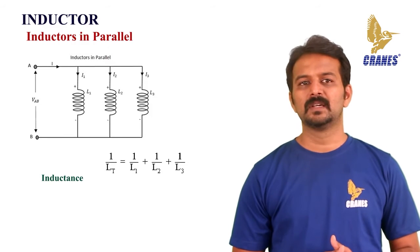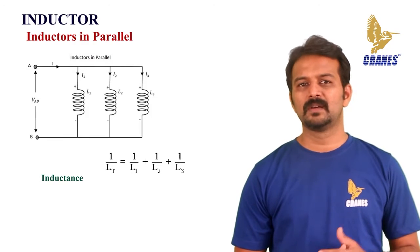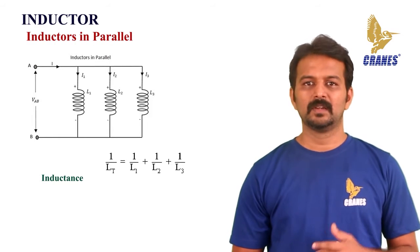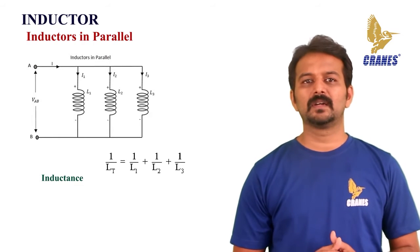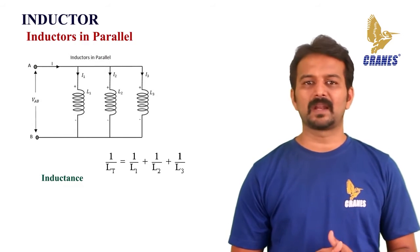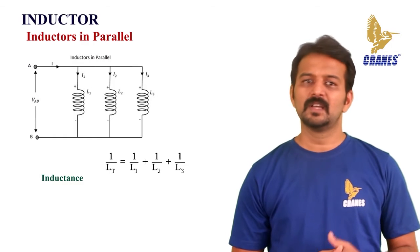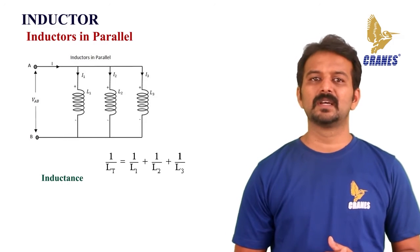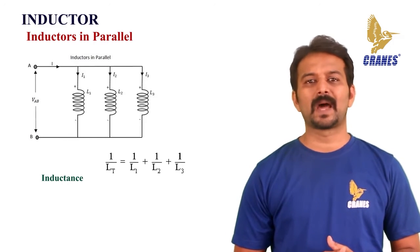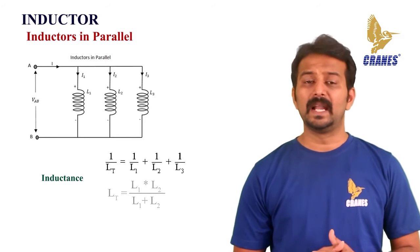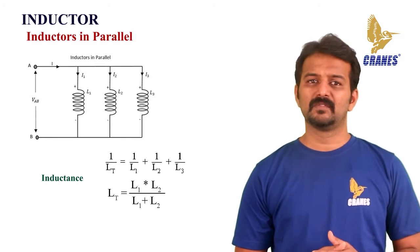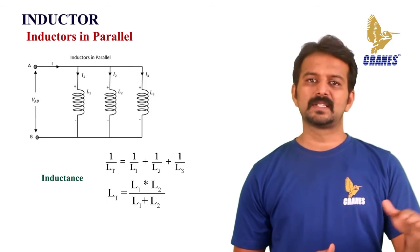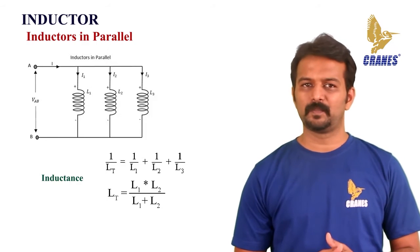The formula for total parallel inductance is: 1/LT = 1/L1 + 1/L2 + 1/L3. From this method, we can derive a simpler equation for two inductors connected in parallel: LT = (L1 × L2) / (L1 + L2).